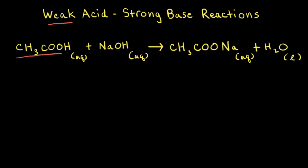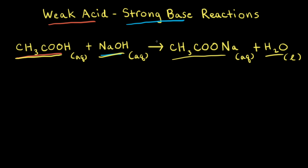Acetic acid is an example of a weak acid, and sodium hydroxide is an example of a strong base. When acetic acid reacts with sodium hydroxide, an aqueous solution of sodium acetate is formed along with water. Since this reaction is an acid-base neutralization reaction and these reactions go to completion, instead of using an equilibrium arrow, we simply draw an arrow going to the right.